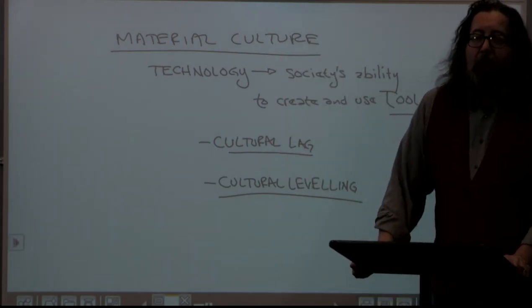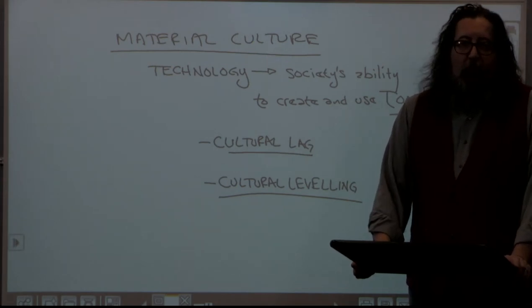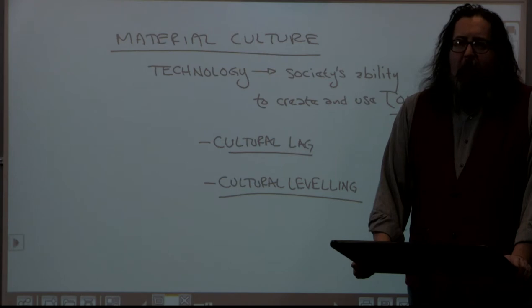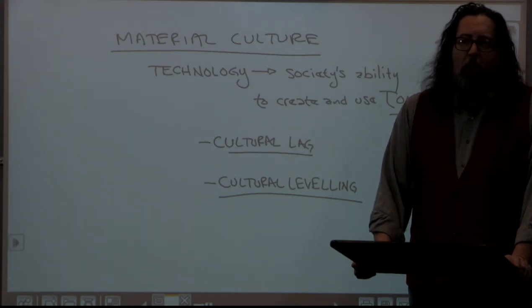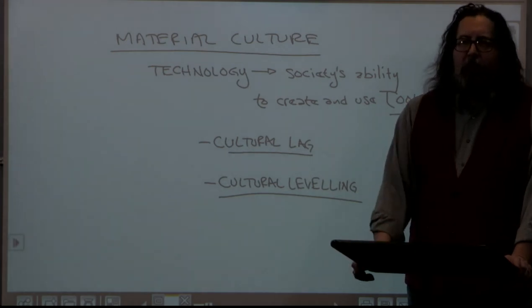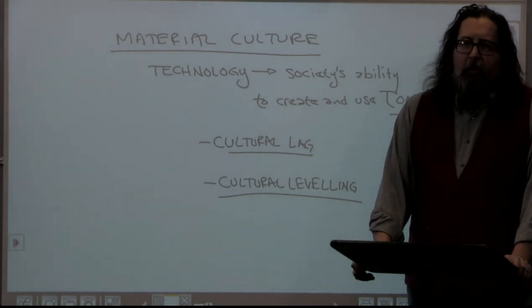We define material culture as things that have a substance — in other words, things you can touch. So many of the things we associate with material culture, things like clothing and jewelry, weapons, types of architecture, transportation — we understand that when different cultures wear different types of clothing or jewelry or decorate their hair or makeup or other accoutrements, it's pretty easy for us to identify culture to culture why different cultures are doing those things.